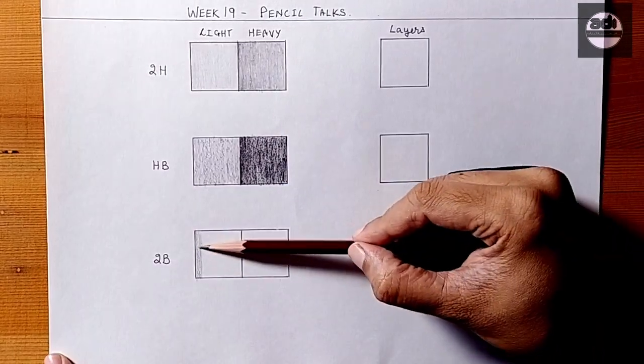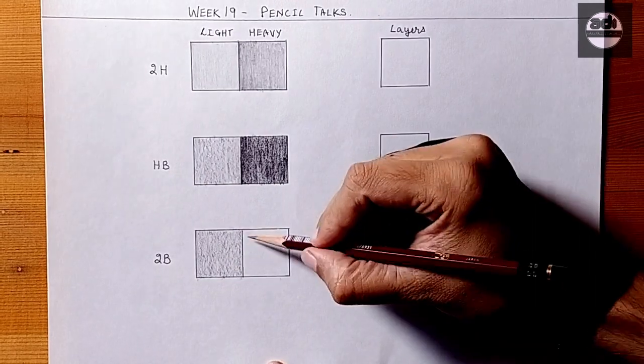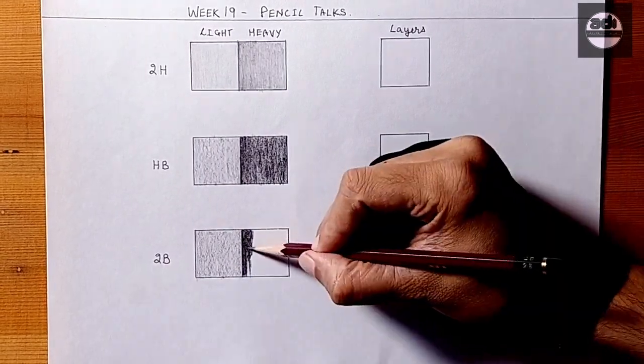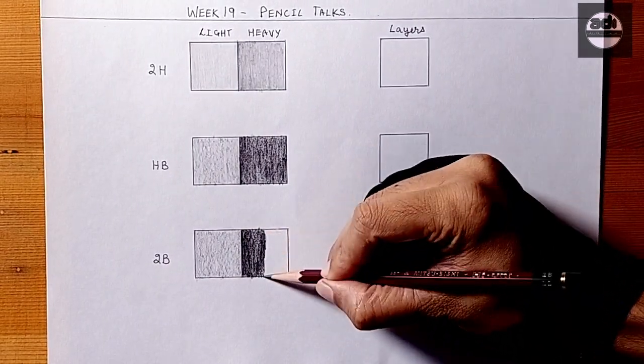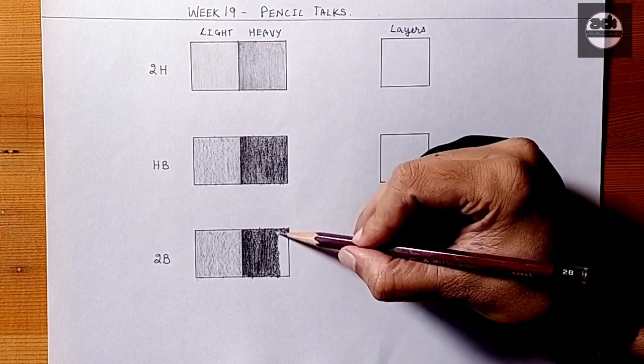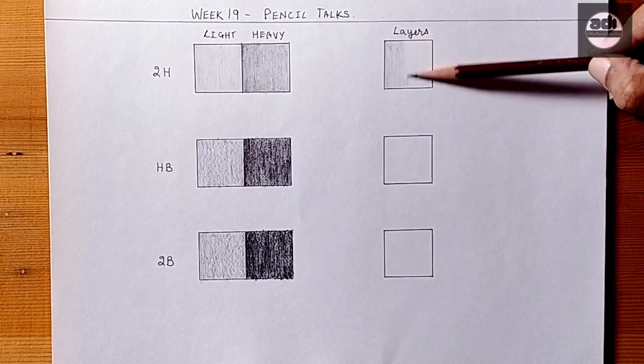Using this method of layering, if after a certain number of layers you don't get the value you're after and it's too light, you need to use a softer pencil. If it's too dark, you need to use a harder pencil.